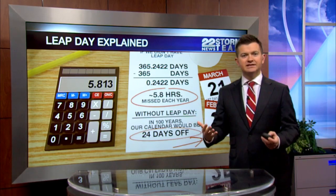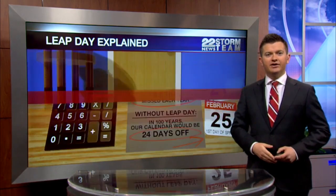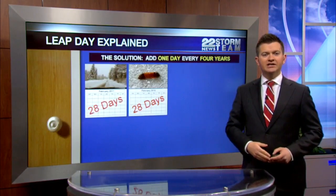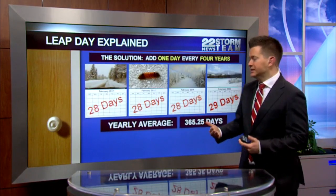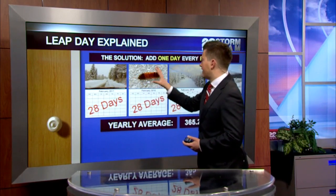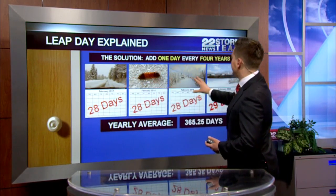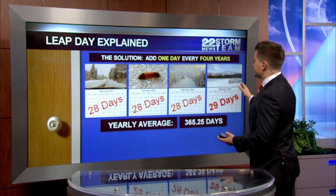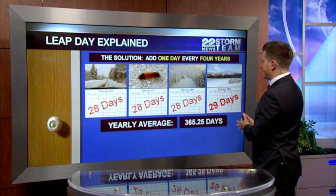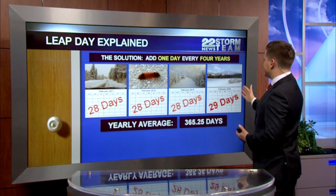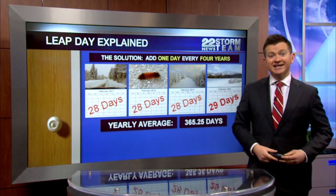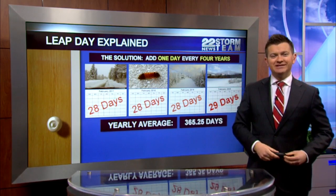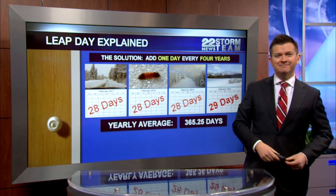This is missed time, and that changes the way that our seasons are calculated. So we have to make up for this missed time each year. If we're missing a quarter of a day every year, after four years that adds up to one day. So we add the extra day every four years and that evens things out. I'm Toronto News Storm Team meteorologist Nick Bannon.